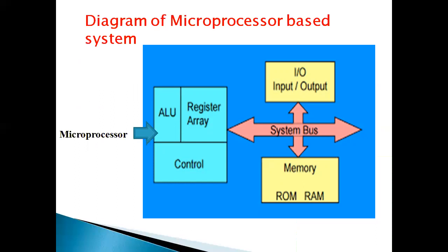The second one is memory. Memory stores binary information such as instructions and data and provides the information to the microprocessor whenever necessary. To execute programs, the microprocessor reads instructions and data from memory and performs the operations. After processing, it will be either transferred to the output device or memory.